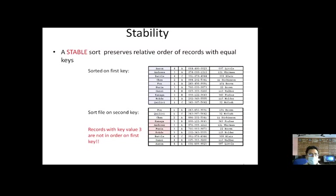Stability: a stable sort preserves the relative order of records with equal keys. For example, in a first table we are sorting on the basis of the first field — the name of the client — selected in alphabetical order. So Anderson starts with A, then B, then C — Chen — and so on. Here we have taken the name as the key value on the basis of which we arrange our data.